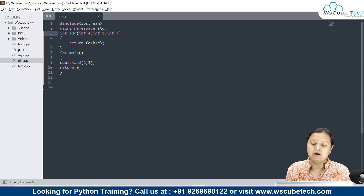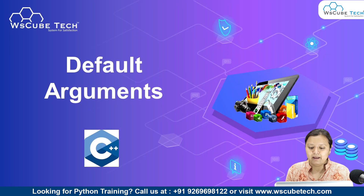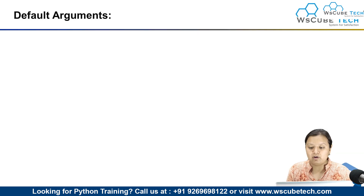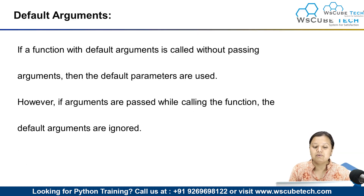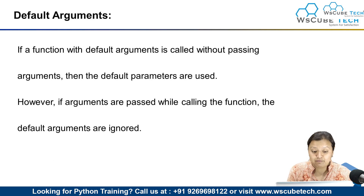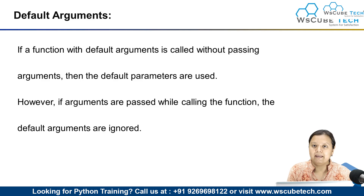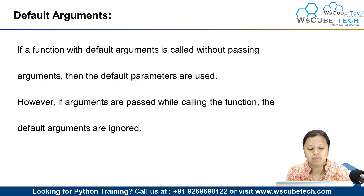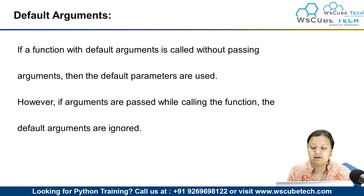So how do we overcome this? This is where the important role of default arguments comes in. Whenever we talk about default arguments, these are basically arguments that you provide by default. If the arguments are not passed, then these default arguments will be used. Otherwise, whatever arguments you have passed will override the default arguments.